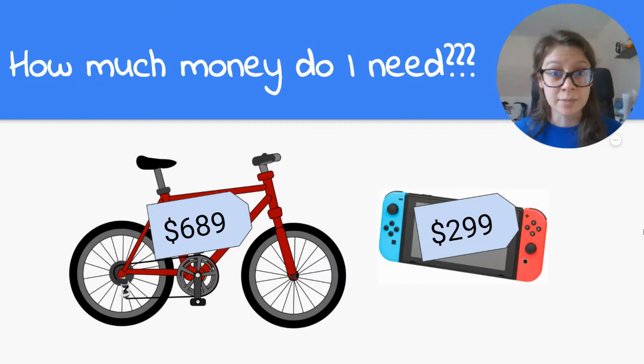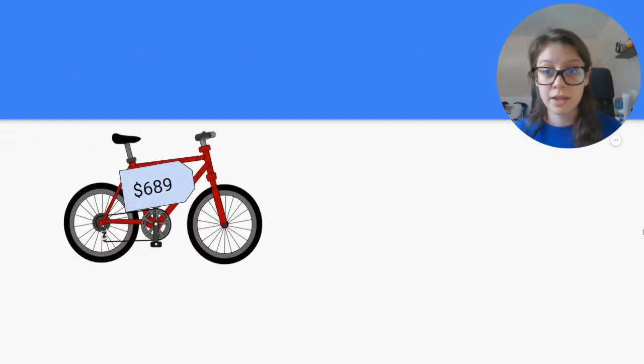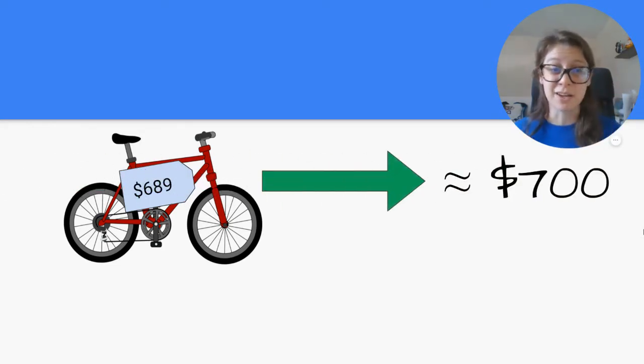At first, I just wanted to estimate the amount of money I needed to see if I was even close to having the correct amount for both of these items. So what I did was I took the cost of the bike, $689, and I said, that's about $700.